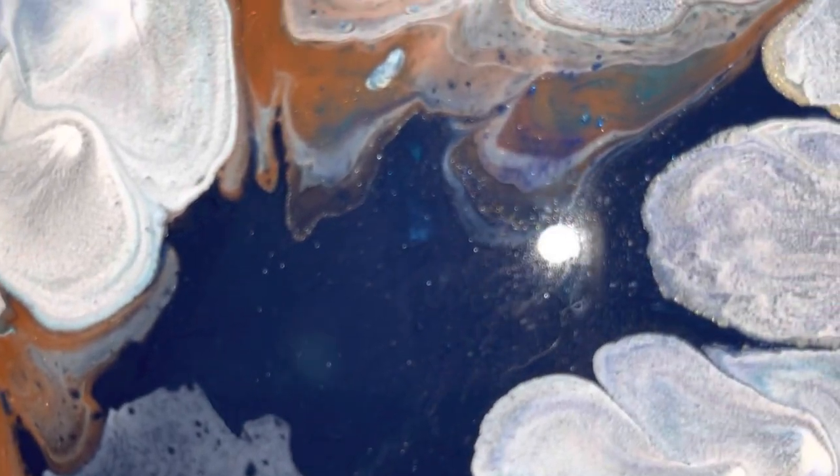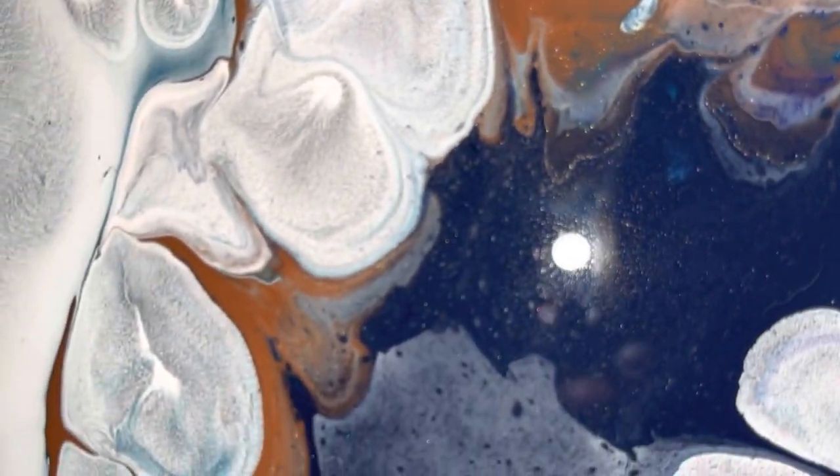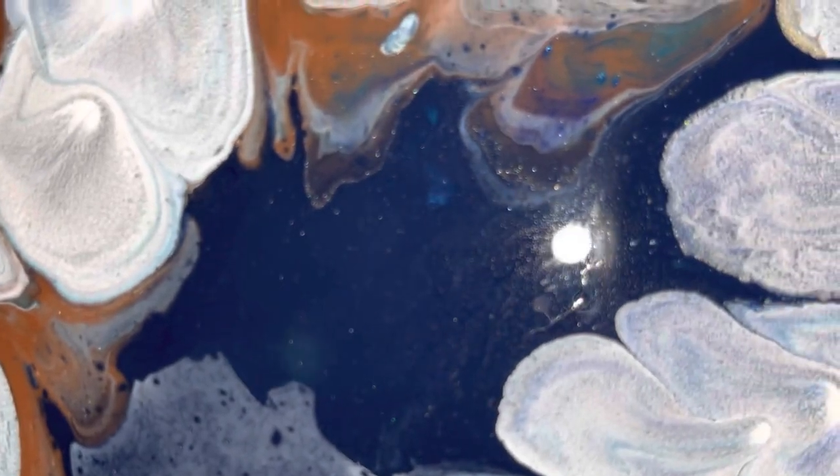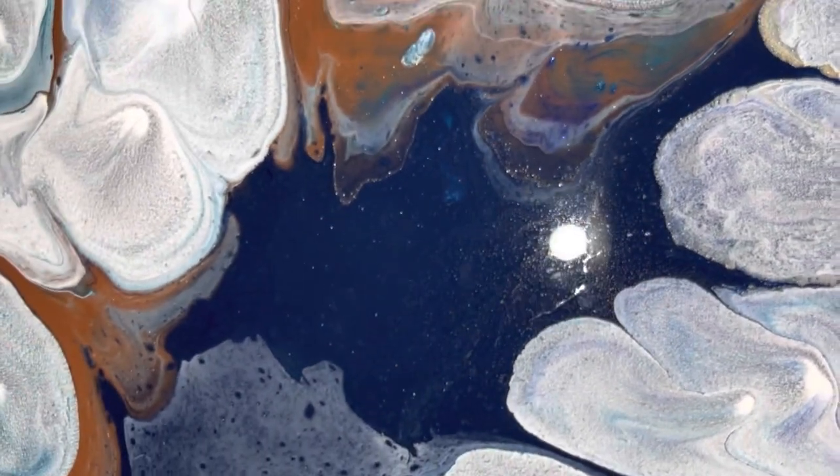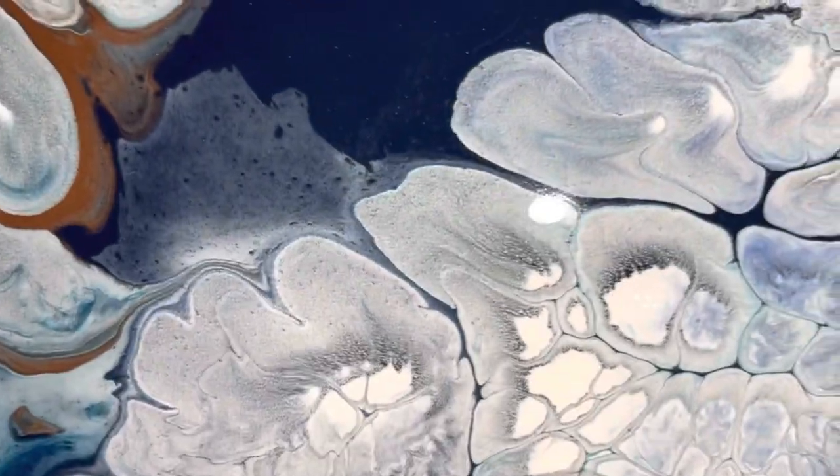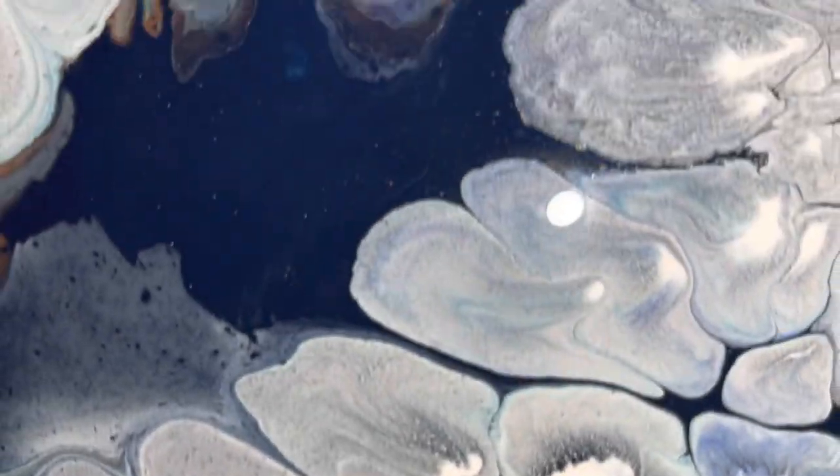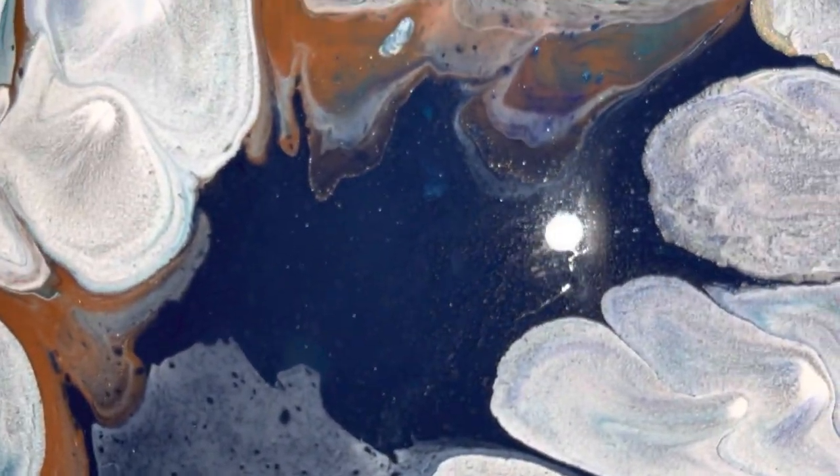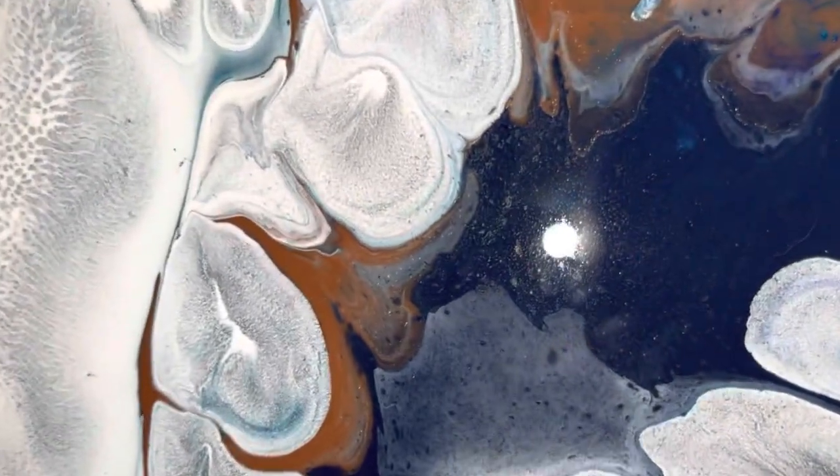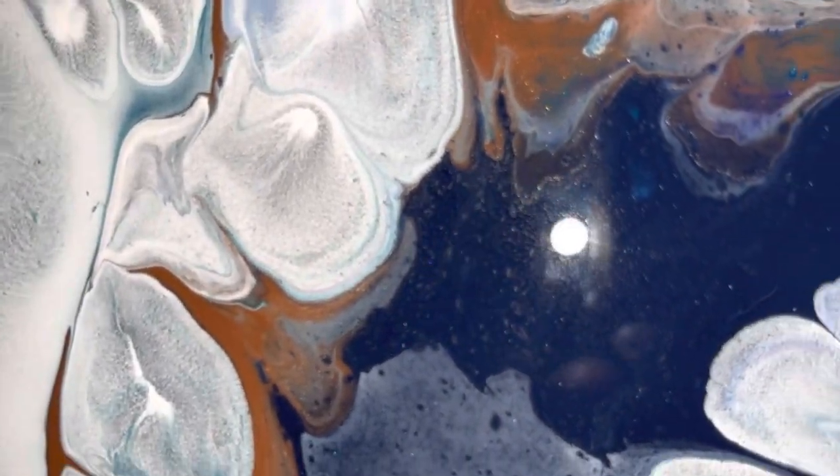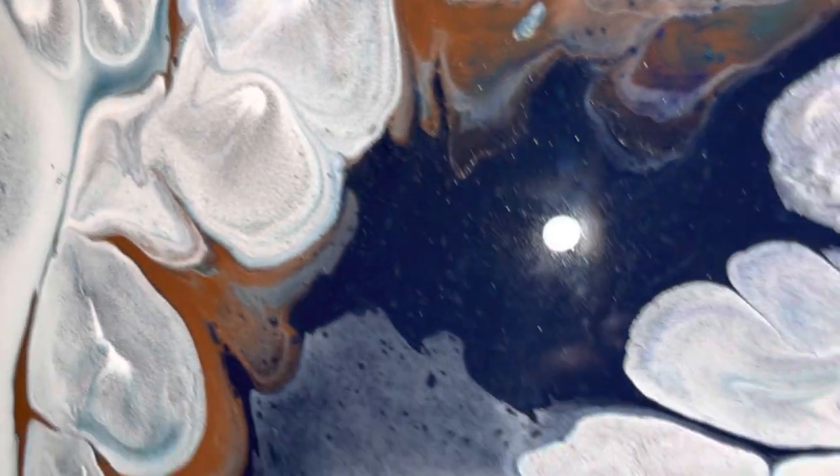So this is the mixture of Payne's gray and—oh I thought I saw something in it, oh I do. There's a little piece of something in there right there, I'm gonna have to get that. But yeah, and then Payne's gray and the Prussian blue.